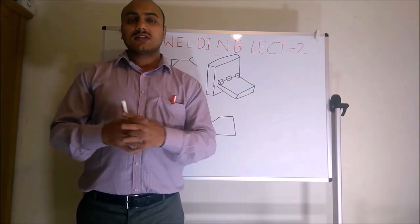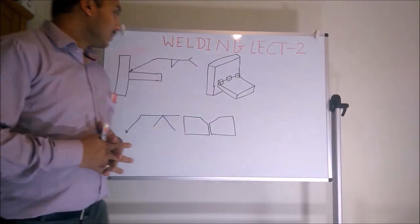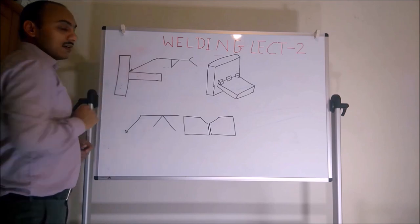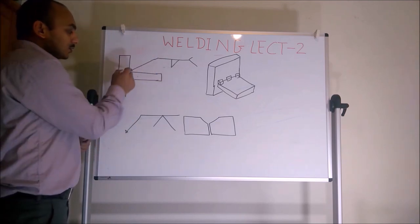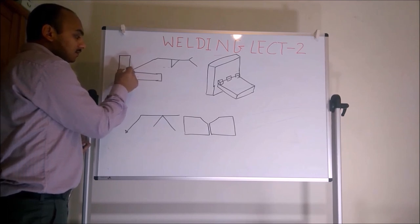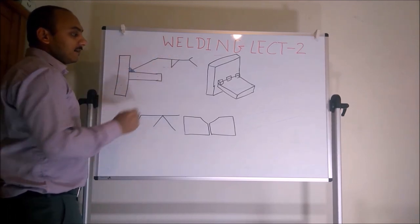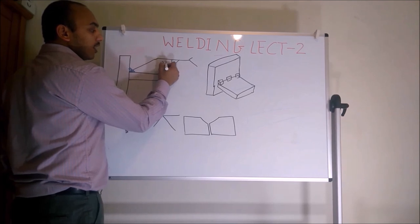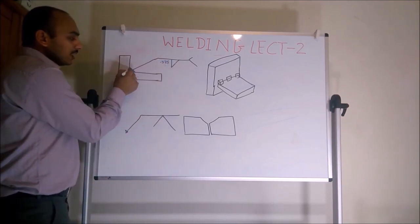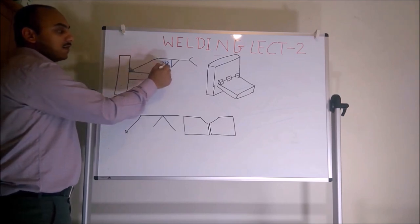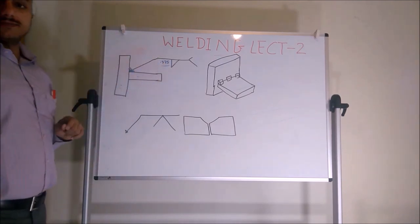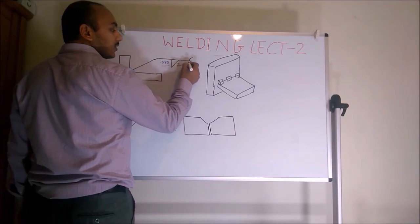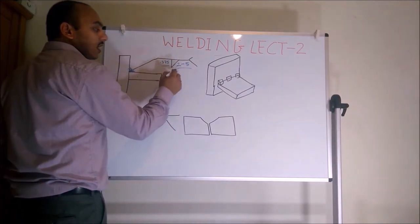Let us discuss how we define the size of weld. For two components at 90 degrees we give a fillet weld. The size is given on the left side of the symbol — for example, 0.375 inches means the leg size of the fillet is 0.375 inches. Sometimes it is given like 2-5, which is called a stitch weld.